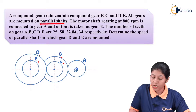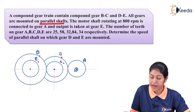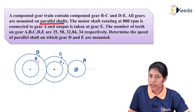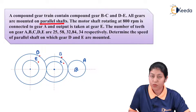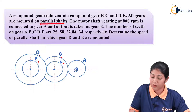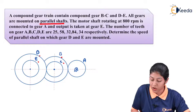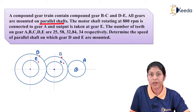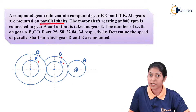The motor shaft is rotating at 800 rpm and it is connected to gear A. So gear A is connected with the motor shaft and that motor shaft speed is 800 rpm. Therefore, the speed of gear A will be equal to 800 rpm. As per that, we can say gear A is the driving gear.